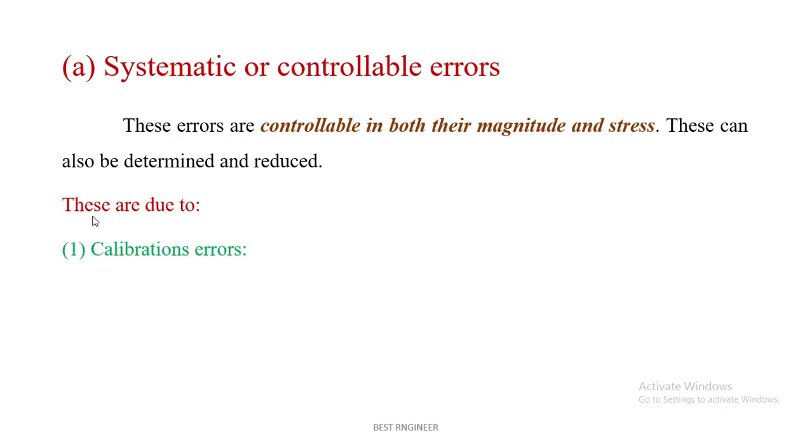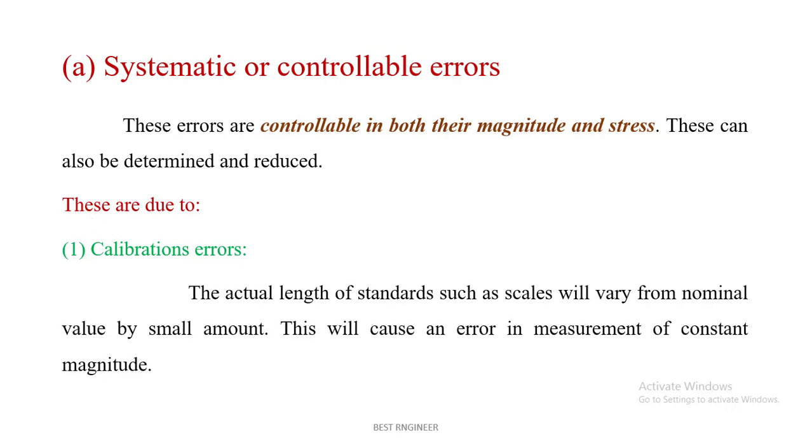The first error in systematic error is calibration error. The actual length of standards such as scales will vary from the nominal value by small amounts. This will cause an error in measurement of constant magnitude. For example, calibration error in a vernier caliper. There are some causes for not coinciding the vernier scale zero and main scale zero. Suppose there is a deviation of 1 mm. Whenever we are measuring there will be a deviation of 1 mm. This is called calibration error.